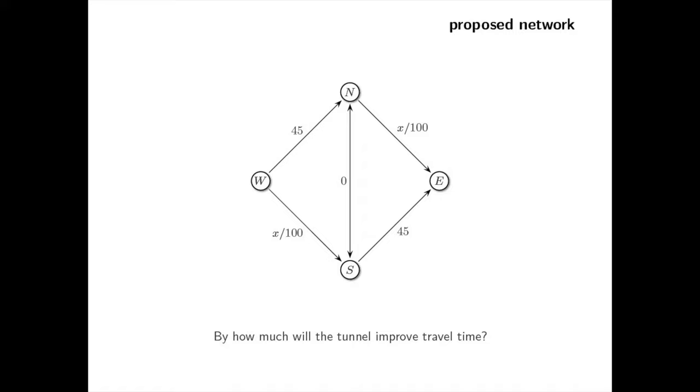And we can split the driver's choice into two parts: how to get to this middle point and how to proceed from there. The busy streets from the west to the middle point can take anywhere between 0 and 40 minutes, depending on traffic.